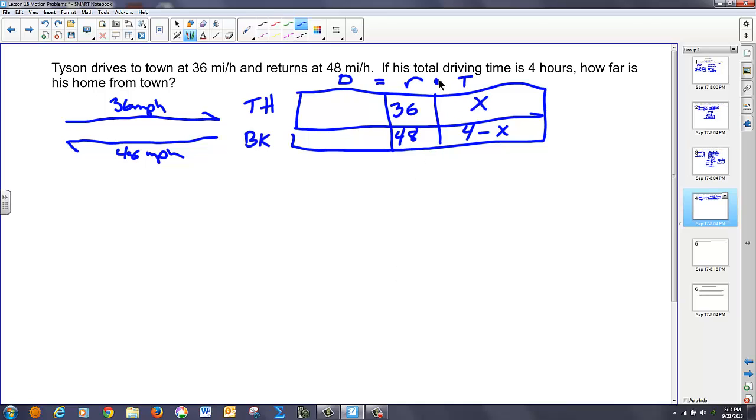I have the rate and the time. I can multiply those together to get my distance. So, I have 36X and then 48 times the quantity of 4 minus X to get back. And, if I look at the picture, I notice the distance there equals the distance back. So, I'll set those two equal to each other. Here are my two distances. Distance there, 36X. Distance back, 48 times 4 minus X.